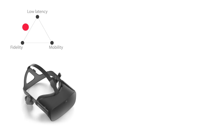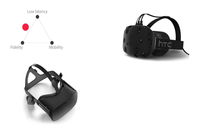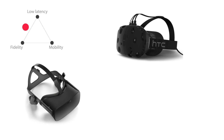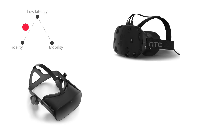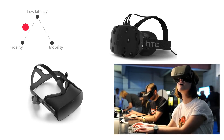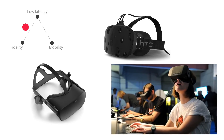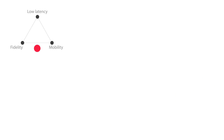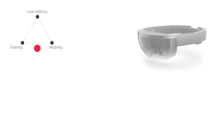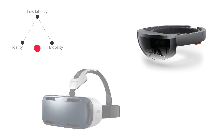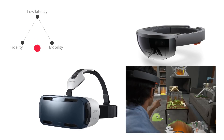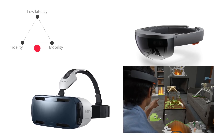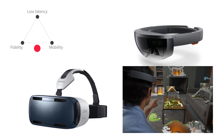Tethered HMDs like the Rift or Vive support high-fidelity graphics with low latency, but users are chained with thick cables to PCs and cannot move around. With untethered devices like the HoloLens or Gear VR, users can freely walk, but the on-device GPUs can only render simple scenes in real-time.